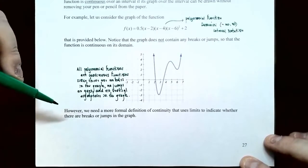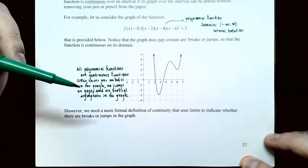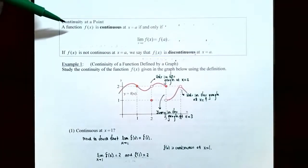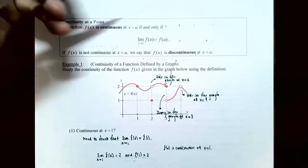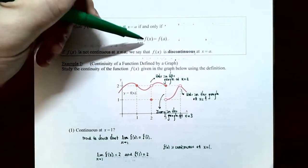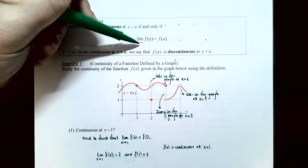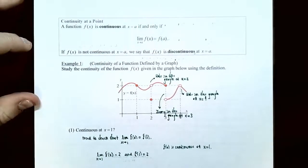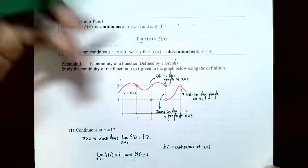However, in calculus we want a more formal definition of what continuous means for a function at a point. That gives rise to what's called the continuity at a point definition. A function f of x is continuous at x equals a if and only if the limit as x approaches a of f of x equals f of a — that is, the y values as x approaches a from the left and right equal the y value at x equals a. If a function is not continuous at x equals a, we say f of x is discontinuous at x equals a.